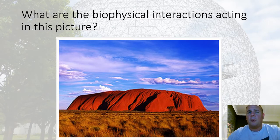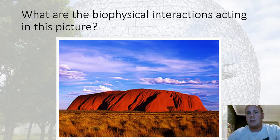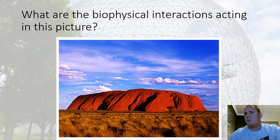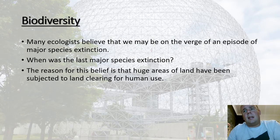Going back to the topic of biodiversity — there's actually a lot of biodiversity in this picture. Some people say this is a semi-arid desert region with not much biodiversity, but if you look closely, that grass contains several different species; there are trees within the grass; and there are many animals that make use of that grass and make their homes there.